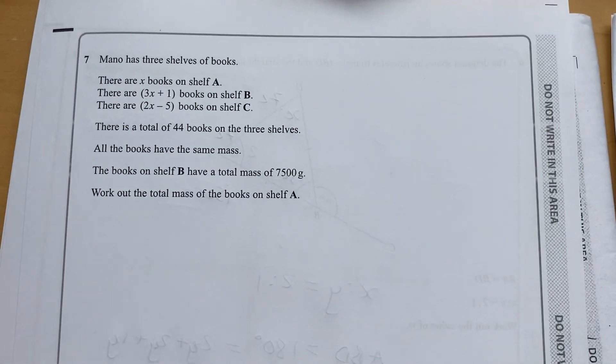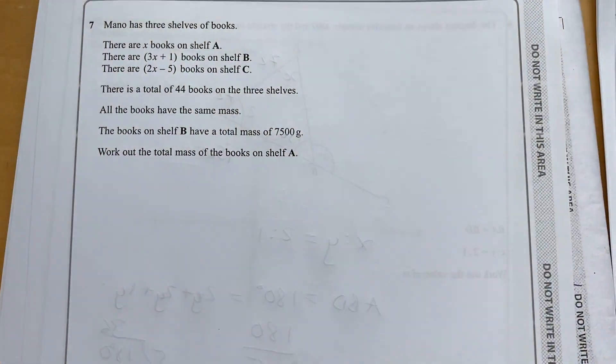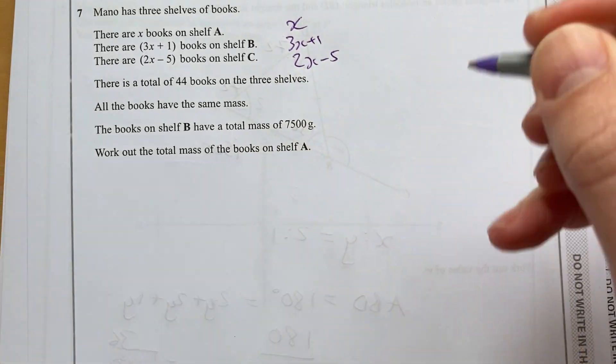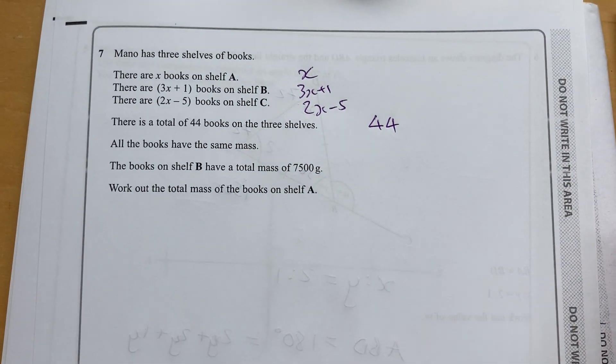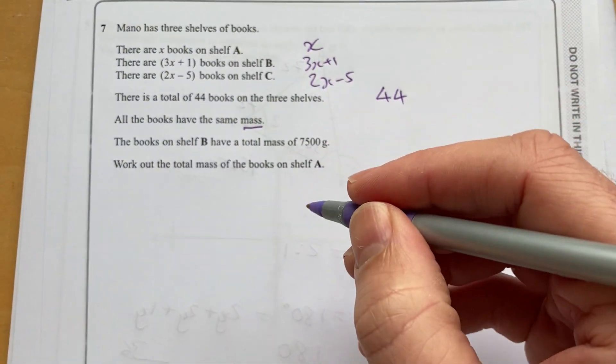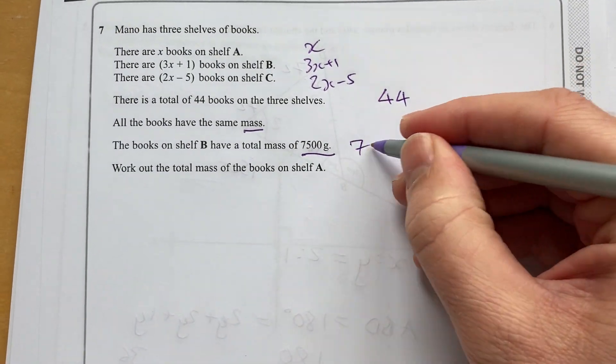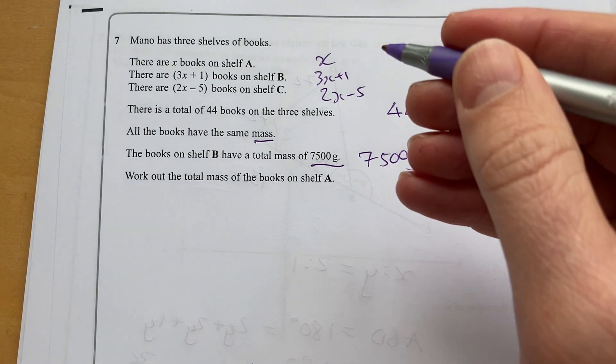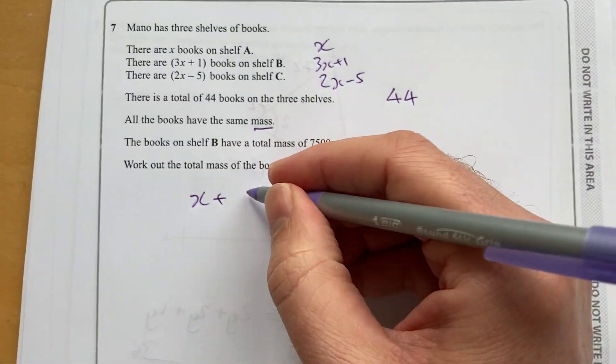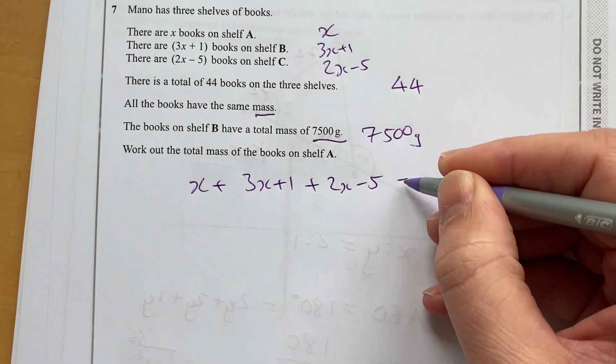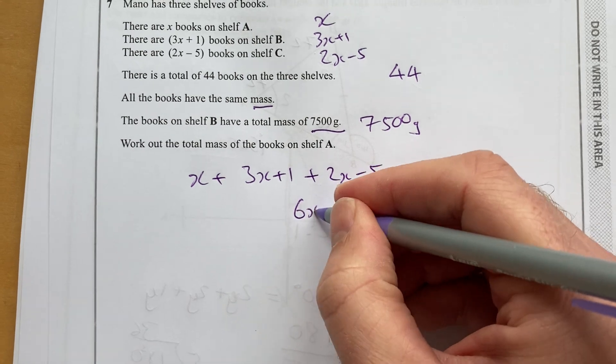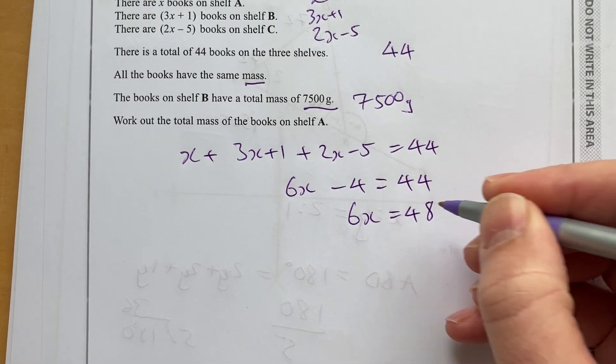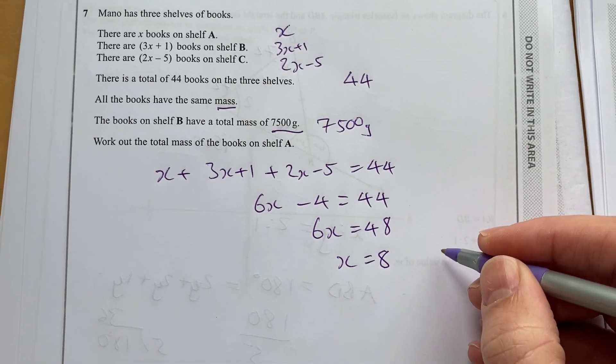Let's move on to question 7. Now 7 says there are X books in A, 3X plus 1 in B, 2X minus 5 in C, and there's a total of 44. So we've got a nice equation we can set up there. All the books have the same mass. The books on shelf B have a total mass of 7,500 grams. Let's start with this equation here to work out how many books is X, and which is then A. So A plus B plus C is 44. That's 6X minus 4 is 44. Adding 4 to both sides, dividing by 6, I get X equals 8.